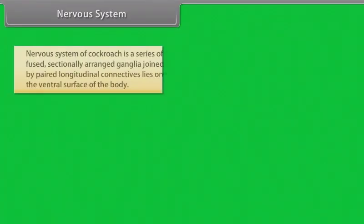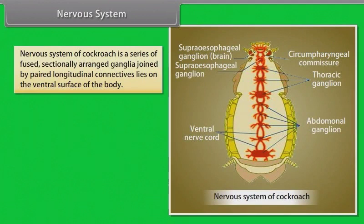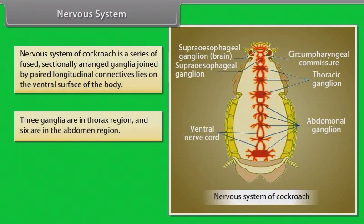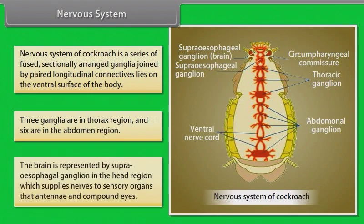Nervous System. The nervous system of cockroach is a series of fused segmentally arranged ganglia joined by paired longitudinal connectives on the ventral surface of the body. Three ganglia are in the thorax region and six are in the abdomen region. The brain is represented by the supra-oesophageal ganglion in the head region, which supplies nerves to sensory organs such as antennae and compound eyes.